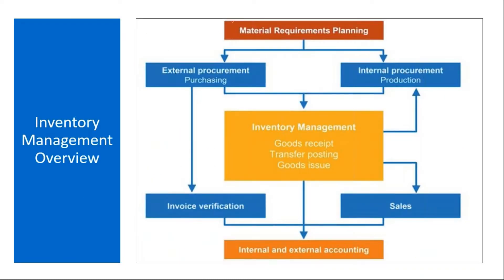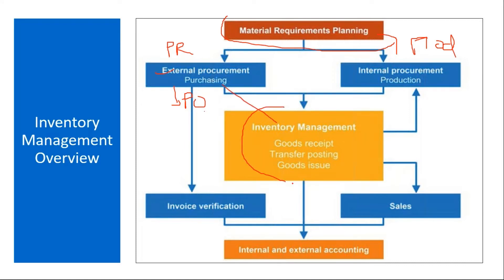Once MRP is executed, for externally procured materials it will generate a purchase requisition (PR), and for internally produced materials it will generate a planned order. From here, inventory management starts — you convert the PR to a PO, and once the vendor supplies the material, you receive it. In production, the planned order is converted to a production order, and inventory management starts once production is complete and a goods receipt is done.